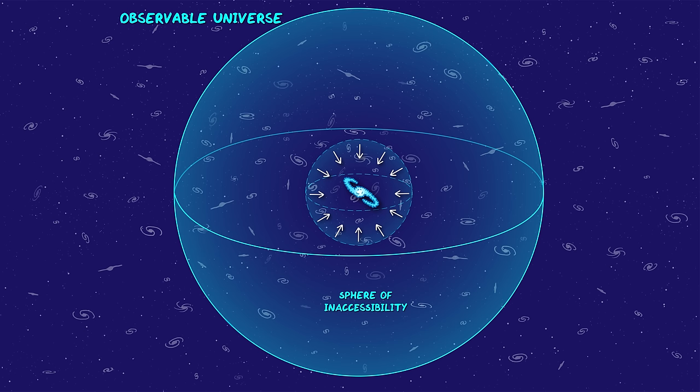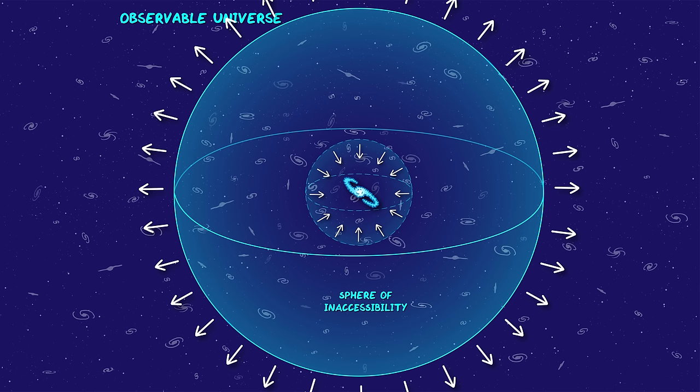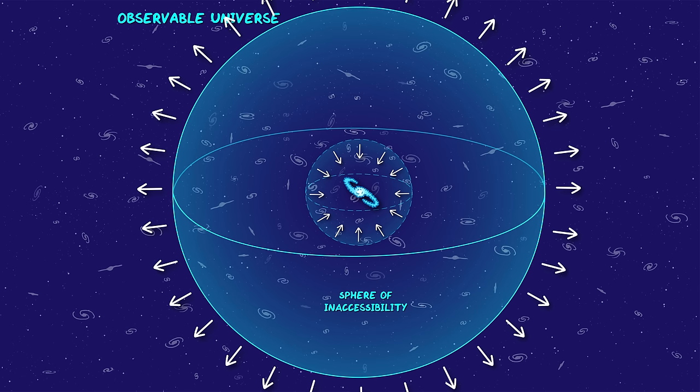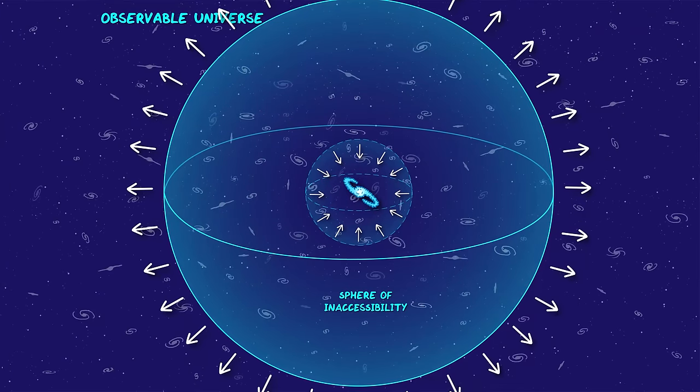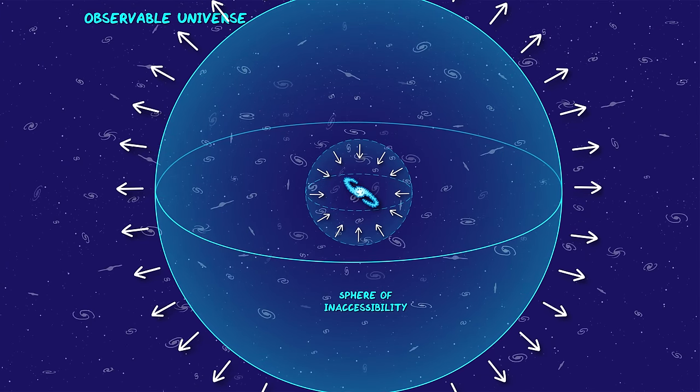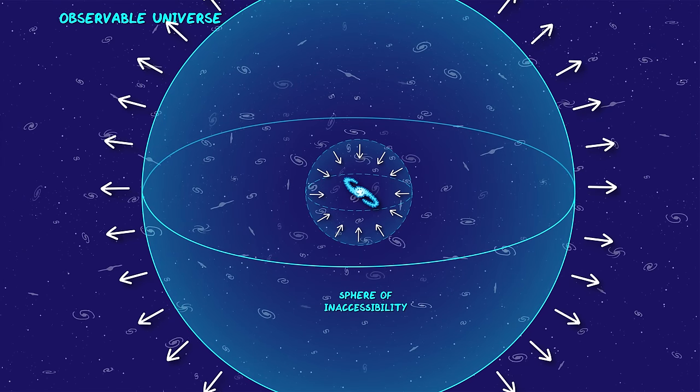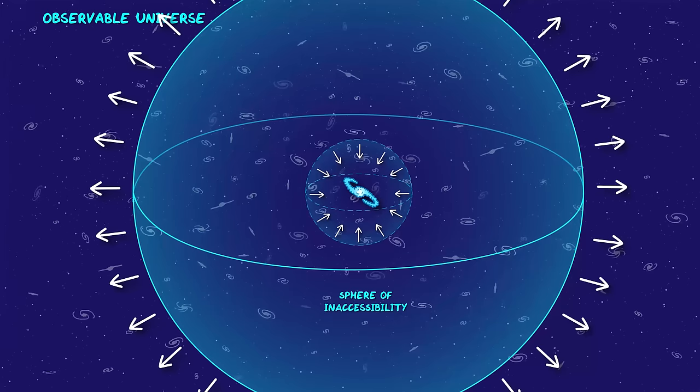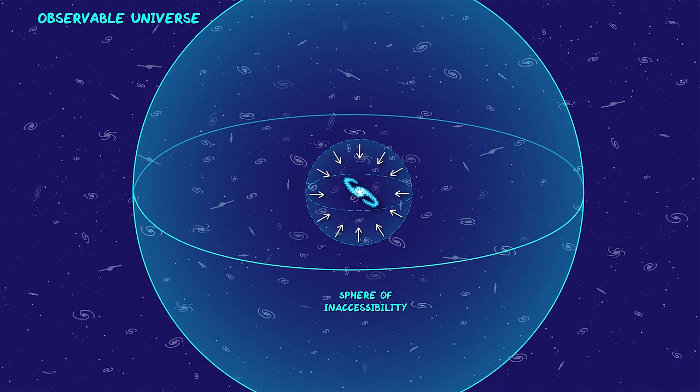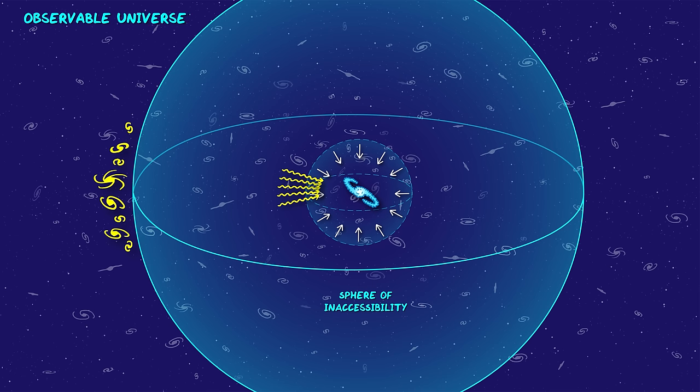As for the edge of the observable universe, the opposite is happening. It's increasing in size over time, which blew my mind when I learned it, because it seems opposite to my intuition about the expanding universe. As time passes, more and more galaxies will slip into view at the edge of the observable universe, and right now, we can see more of the universe than we've ever been able to see in the history of the Earth.